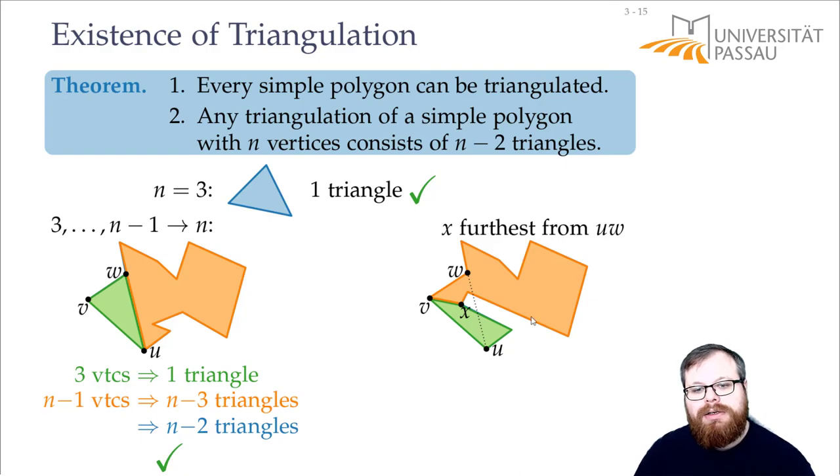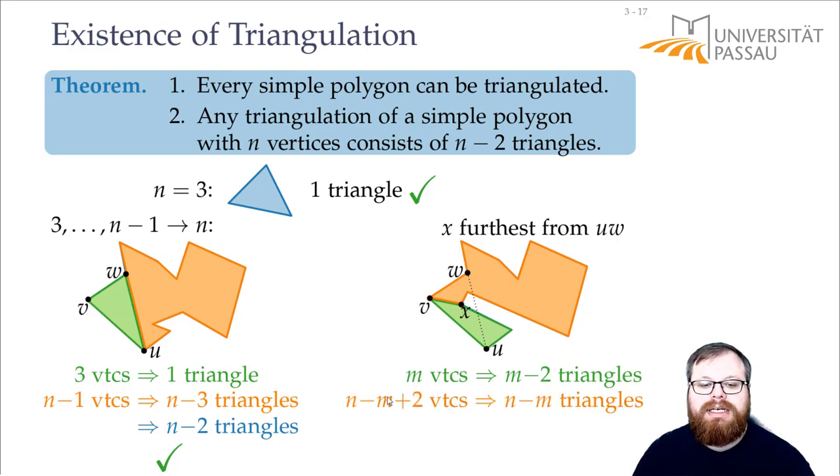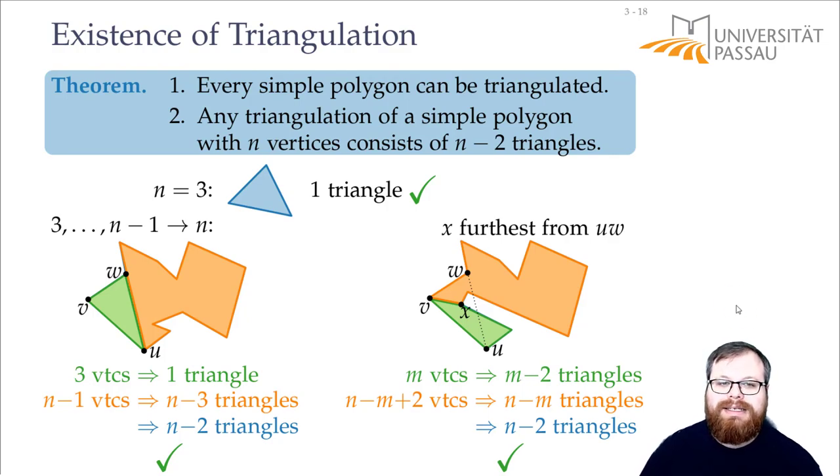The green one, let's say it has m vertices. So by induction, it gives us m minus two triangles. And the orange one has all the other vertices and v and x also. So it has n minus m plus two because these are in both polygons. So by induction, we get n minus m triangles. And together, this again is n minus two. So that means that we can partition every polygon with n vertices into n minus two triangles.